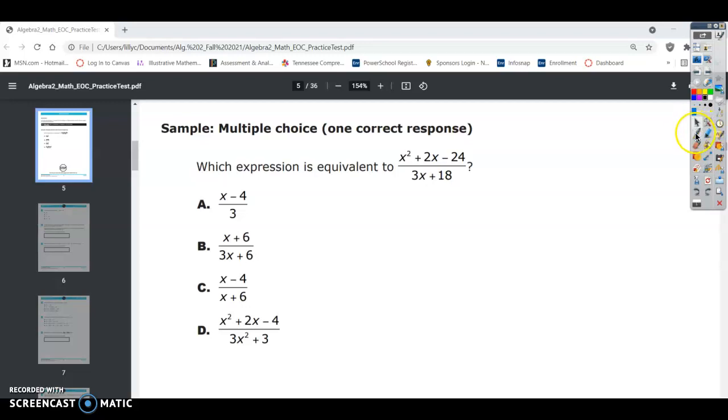Alright, this is the Algebra 2 EOC Practice Test Sample Question. So it says, which expression is equivalent to x squared plus 2x minus 24 divided by 3x plus 18?